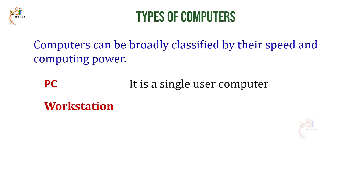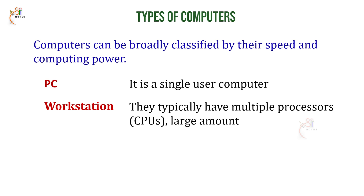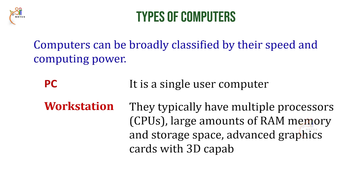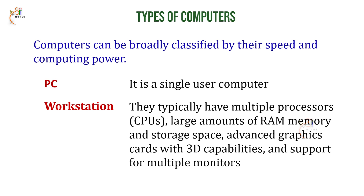The second type is the workstation. Workstations typically have multiple processors, a large amount of RAM, memory and storage space, advanced graphic cards with 3D capabilities, and support for multiple monitors. For example, in a company we have a number of systems connected to a main system.